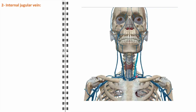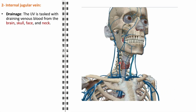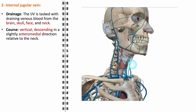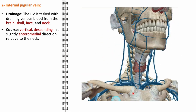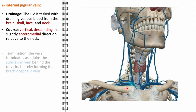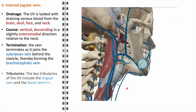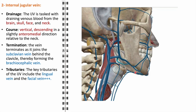The internal jugular vein is a major component of the facial vasculature. In terms of drainage, it is responsible for collecting venous blood from the brain, skull, face, and neck, including blood that has circulated through the cerebral veins, cranial nerves, and the various superficial and deep structures of the face and neck. The internal jugular vein descends vertically in the neck, slightly anteromedial, positioned within the carotid sheath alongside the carotid arteries. It ultimately joins the subclavian vein behind the clavicle to form the brachiocephalic vein, a key vessel contributing to venous return to the heart.